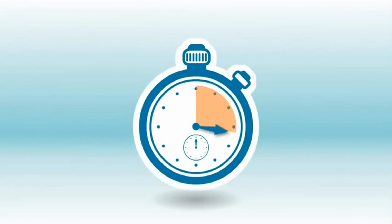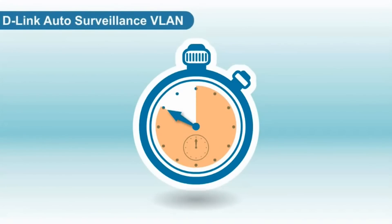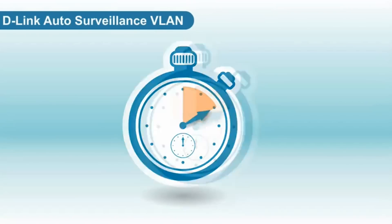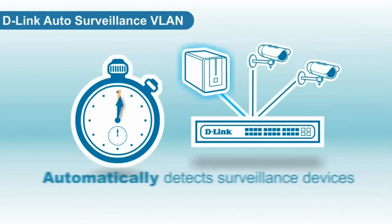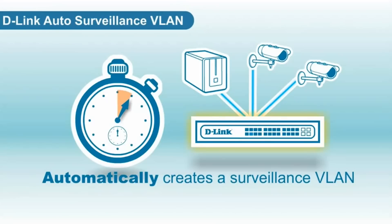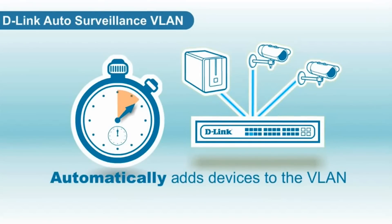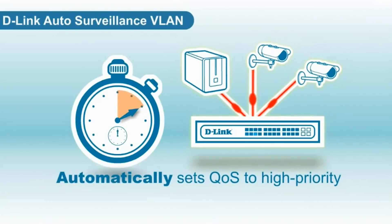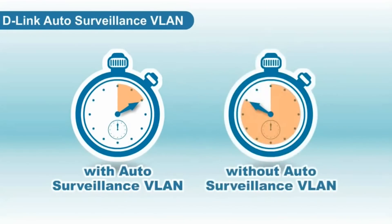Normally, setting this up on your network is difficult and time-consuming, but D-Link WebSmart3 switches with Auto Surveillance VLAN make this process quick, easy, and automatic. Simply connect your D-Link surveillance equipment, and upon detecting your devices, the Smart3 switch automatically creates a surveillance VLAN, adds your devices to the VLAN, and automatically sets QoS to high priority. Auto Surveillance VLAN does this all automatically, drastically cutting the time and effort needed to create and deploy a reliable hybrid network.